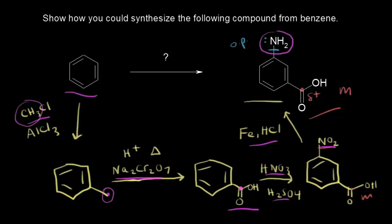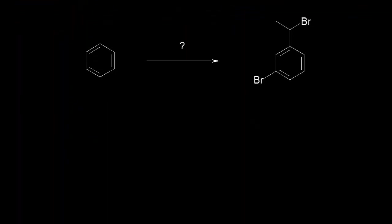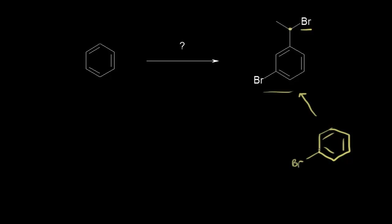Let's do one more synthesis problem. Our target molecule this time has a bromine right at the benzylic position — the carbon right next to our benzene ring. I know a reaction that will put a bromine in the benzylic position: that's the free radical bromination reaction. The precursor would be a benzene ring with a bromine on the ring and just an ethyl group. For this, I would need NBS, heat, carbon tetrachloride as a solvent, and a peroxide to initiate the free radical mechanism.